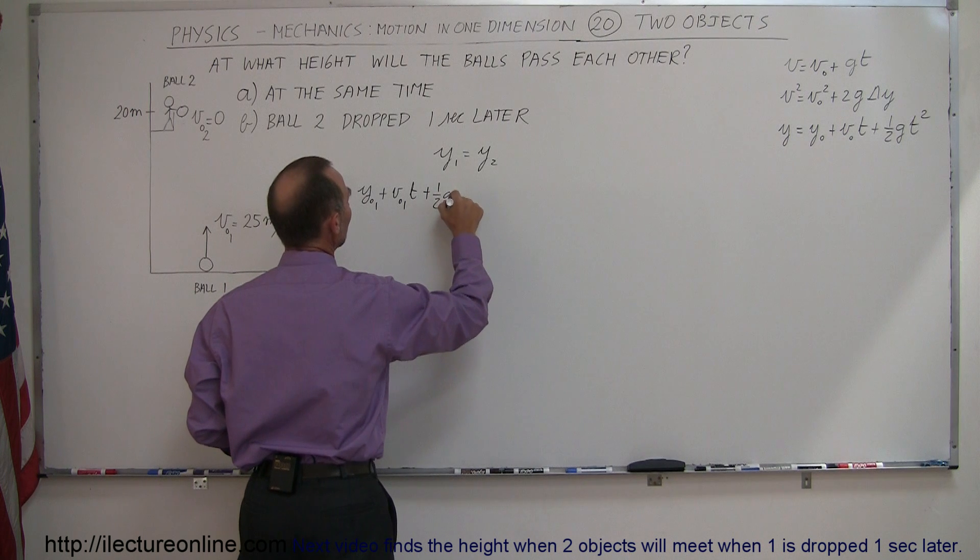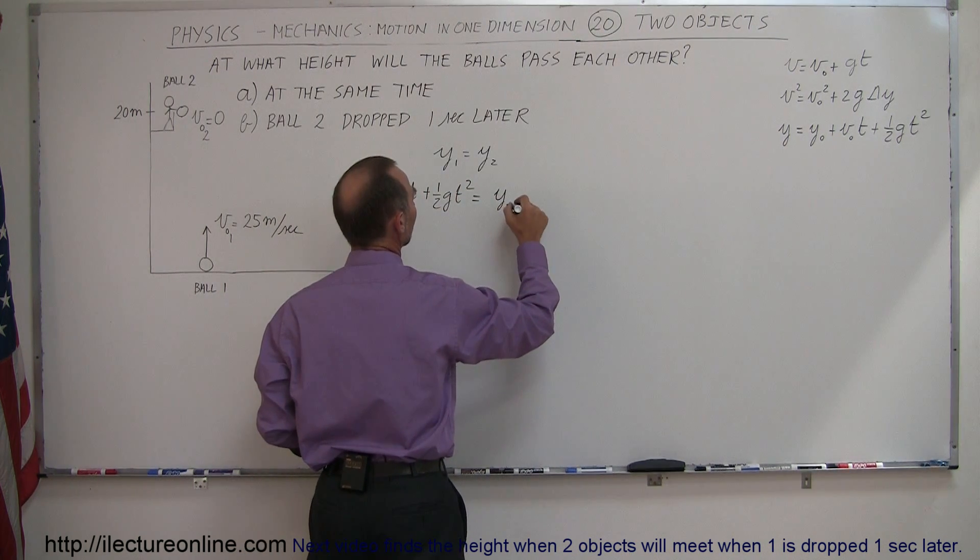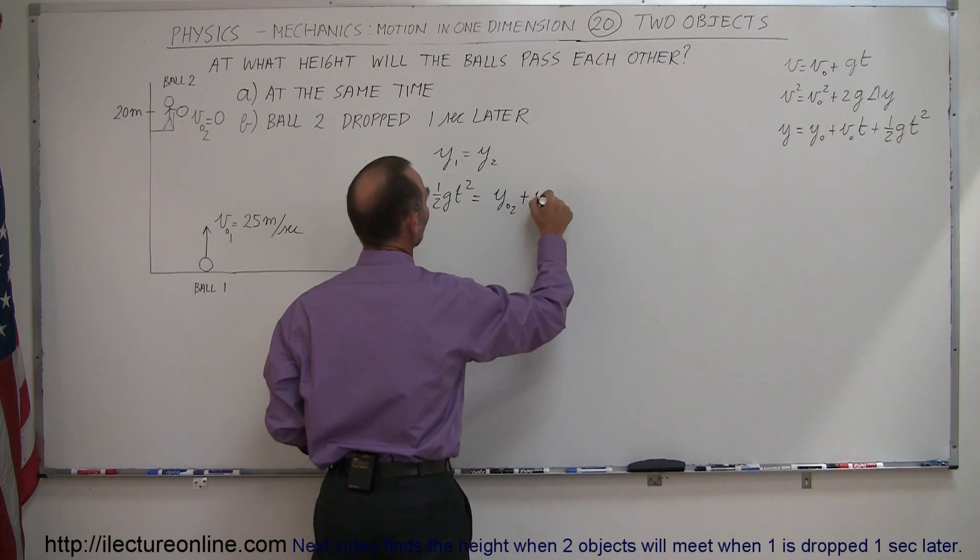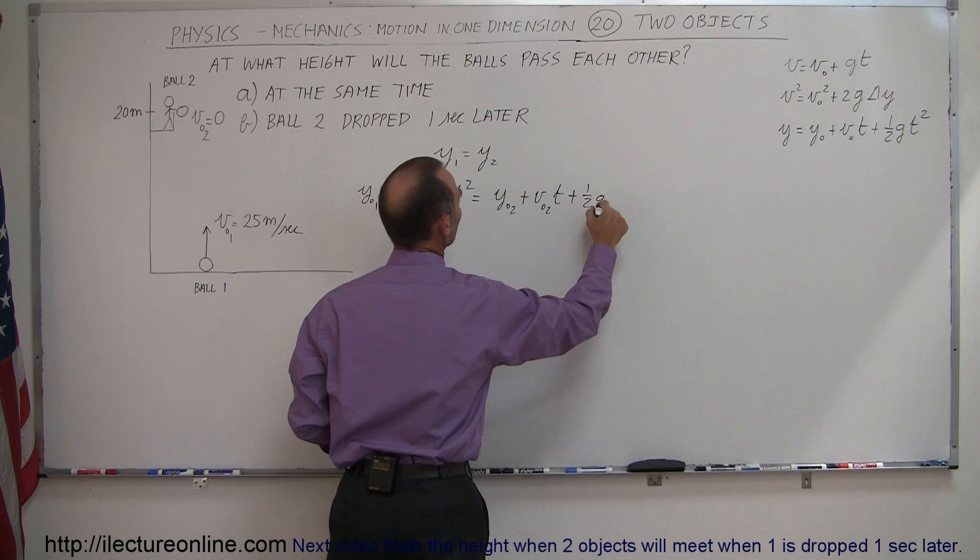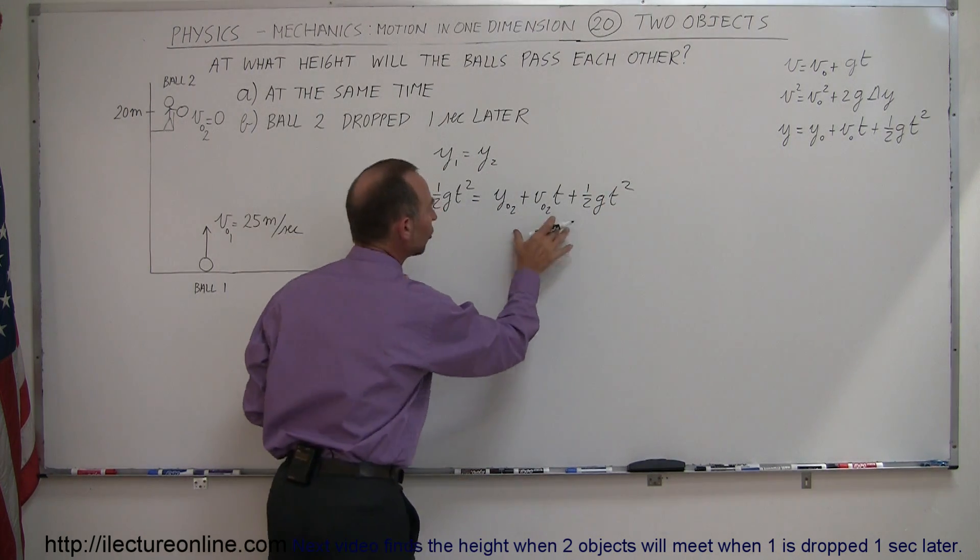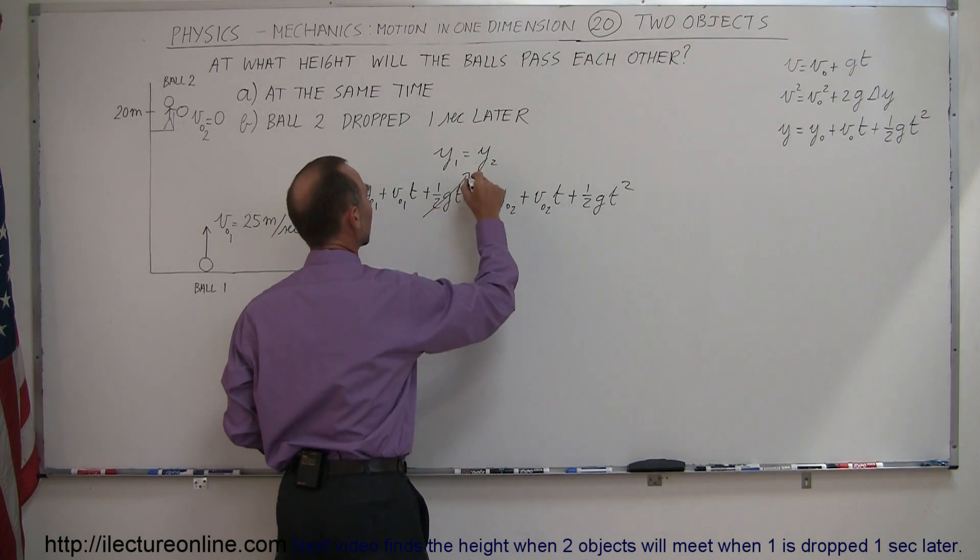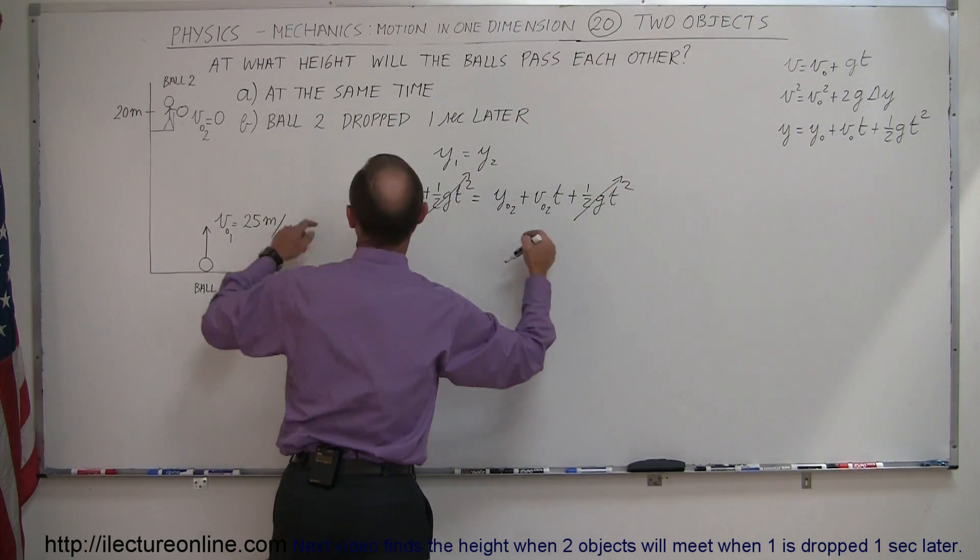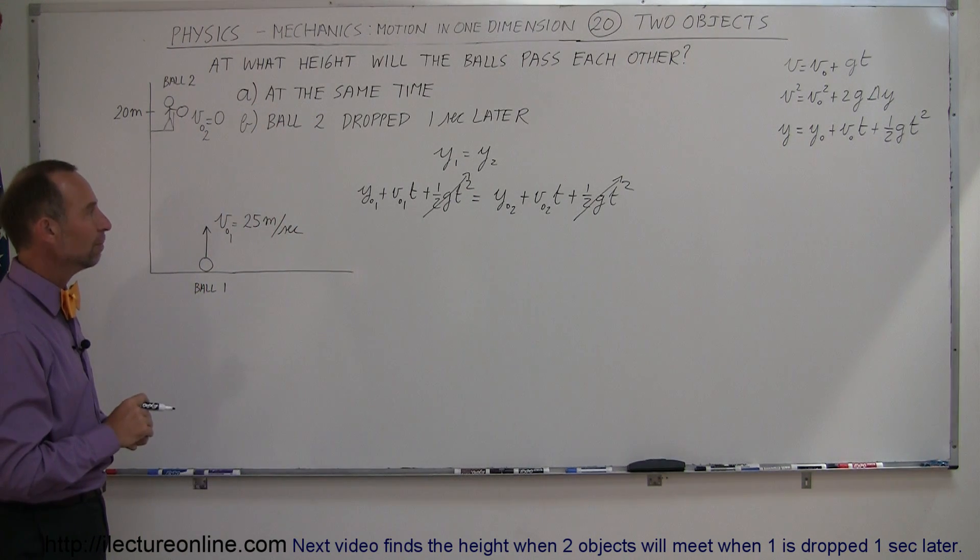plus one-half gt squared, equals y initial for the second ball, plus v initial for the second ball times time, plus one-half gt squared. So, now we have y1 equals to y2, and obviously right away you can see that the one-half gt squared cancels out on both sides of the equation, because they start at the very same time, so t is equal for them, for each of them.